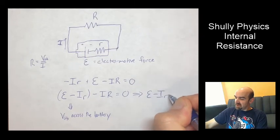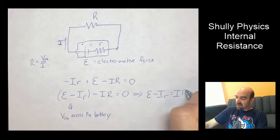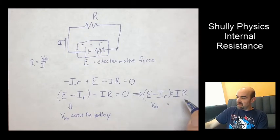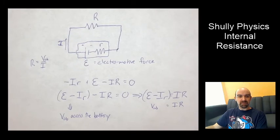And you can also rewrite this, ε minus I little r equals I big R. So we have the VAB across the battery equals the I R of the load in the circuit.